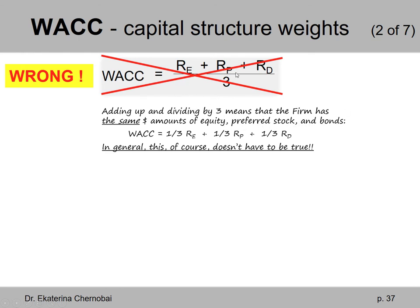Mathematically, dividing by three is the same as one-third times the cost of equity RE, plus one-third times the cost of preferred stock RP, plus one-third times the cost of debt RD. In general, this doesn't have to be true. Firms may have a lot more money that's borrowed rather than what's provided by the company owners.